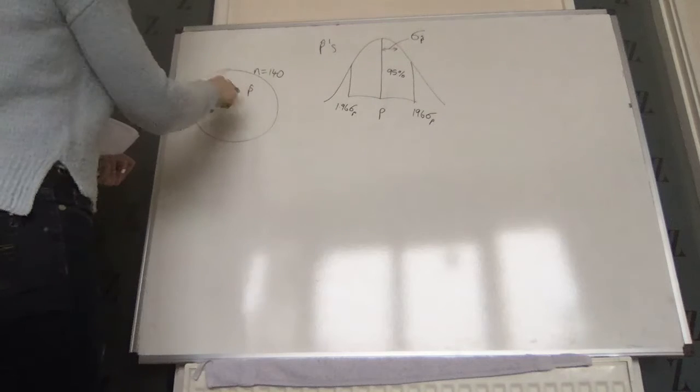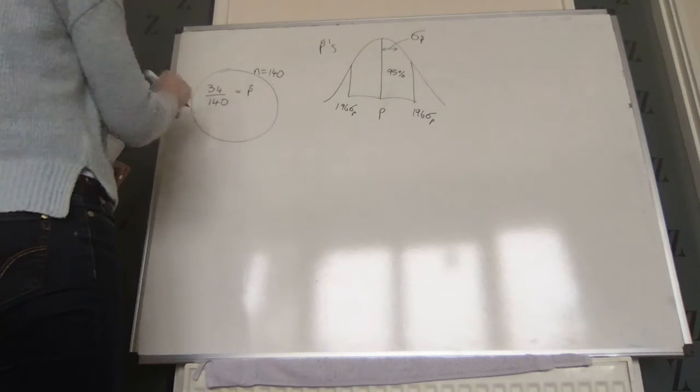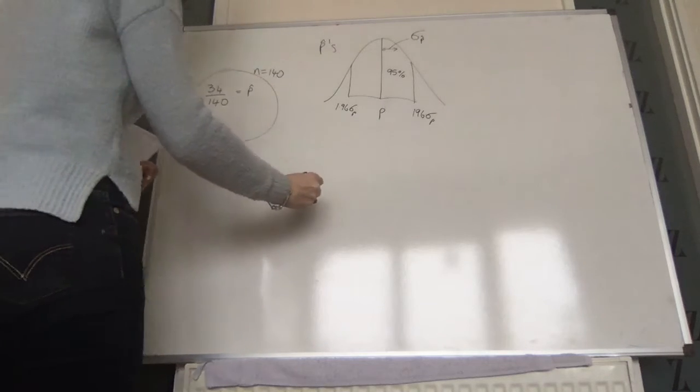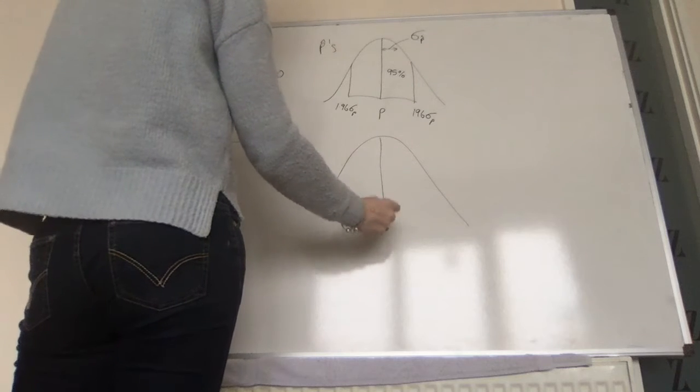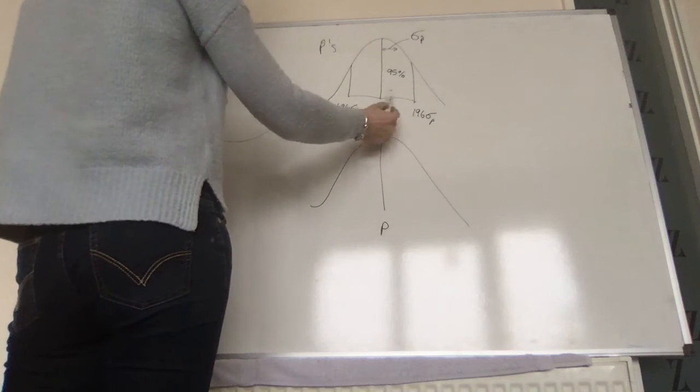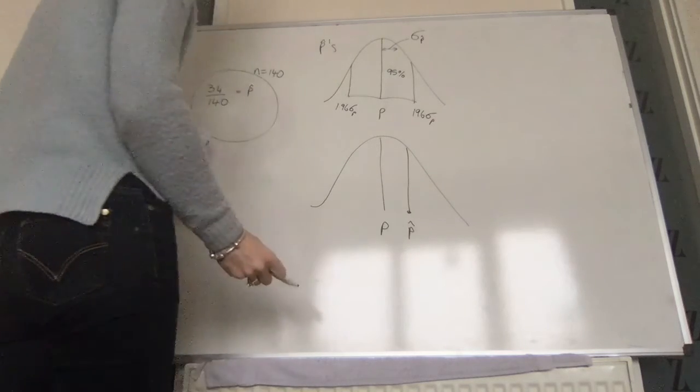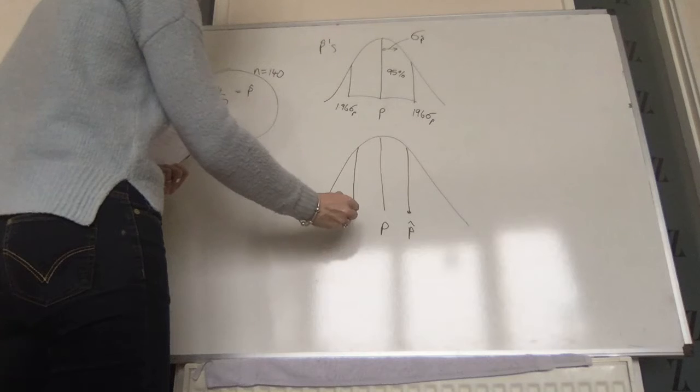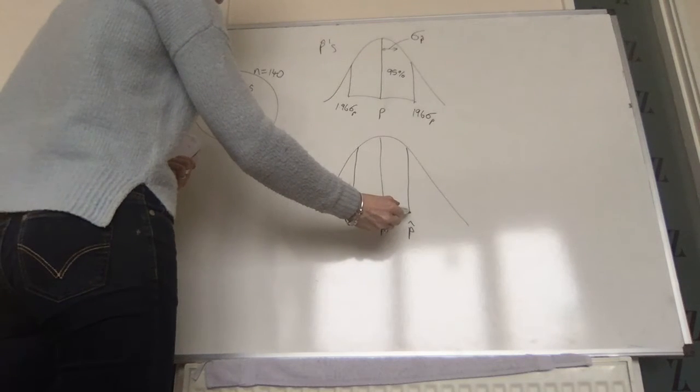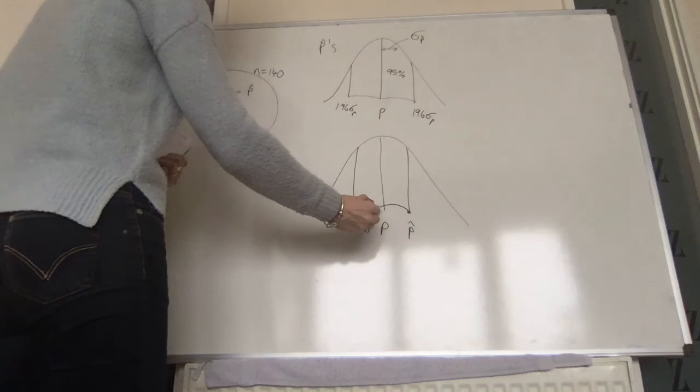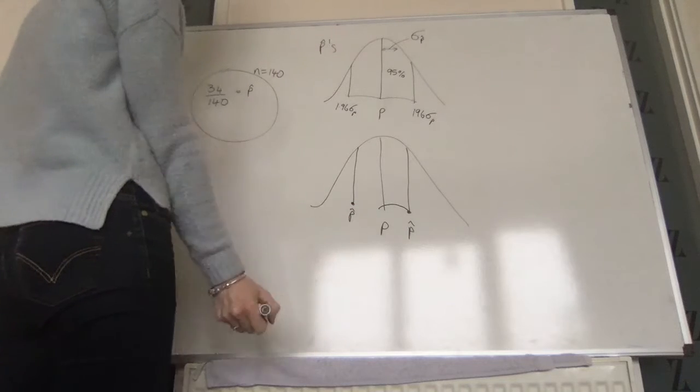Now we're being told that the p-hat of our random sample is 34 out of 140. So if we assume that p-hat is within that 95% interval, then we know it's in here somewhere. And if it's in here, we can't tell which side it's at, but we do know that we can be 95% sure that it is 1.96 standard deviations away from the actual p.